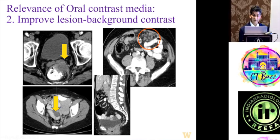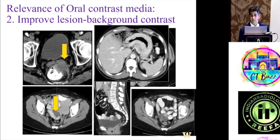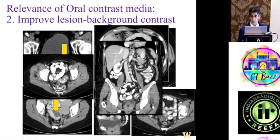Here is an example of rectal cancer invading the seminal vesicle — it's so much easier when the rectum is distended. This is a peritoneal implant that we can miss if the bowel is not opacified; when the bowel is opacified, those implants become visible. Subtle peritoneal disease or omental changes can be very tough without bowel opacification. Linitis plastica — gastric infiltrative cancer — can be missed when the stomach is not distended. Oral contrast is critical for detecting small pelvic tumors, peritoneal disease, and for differentiating normal from abnormal.